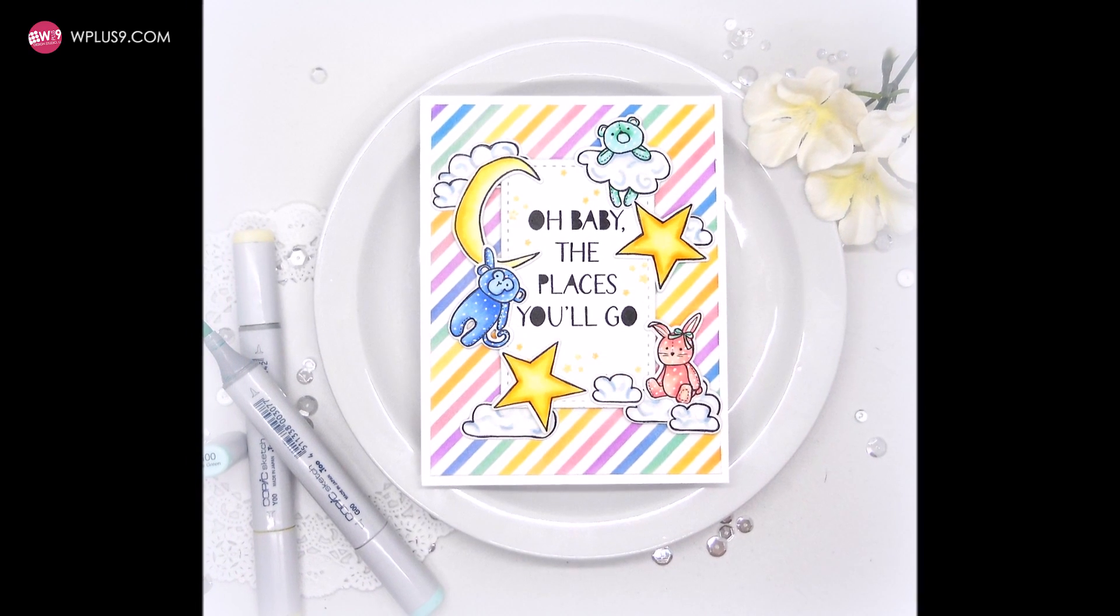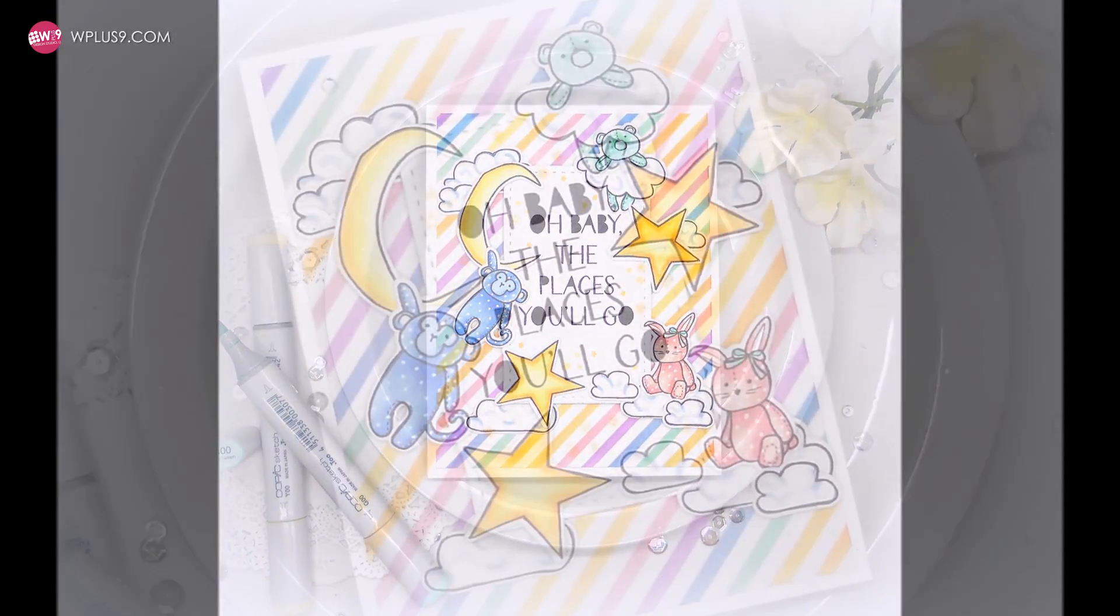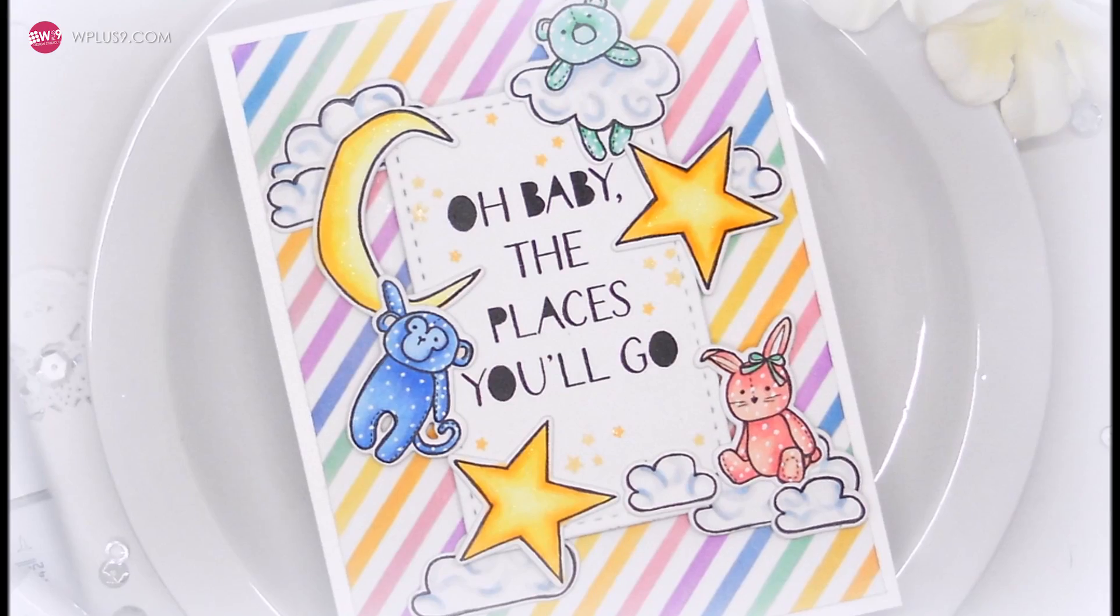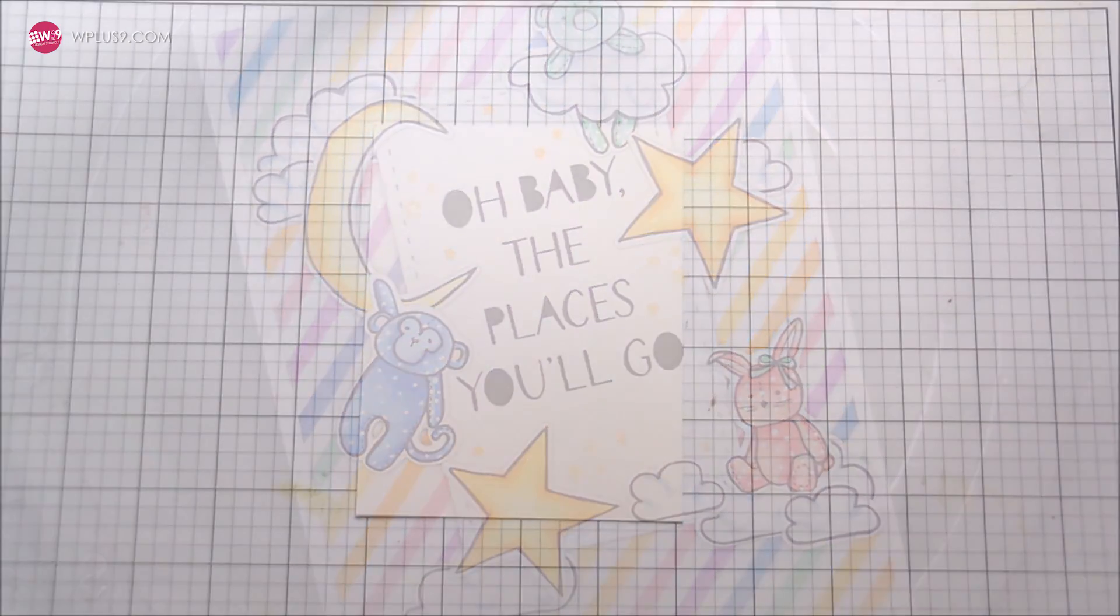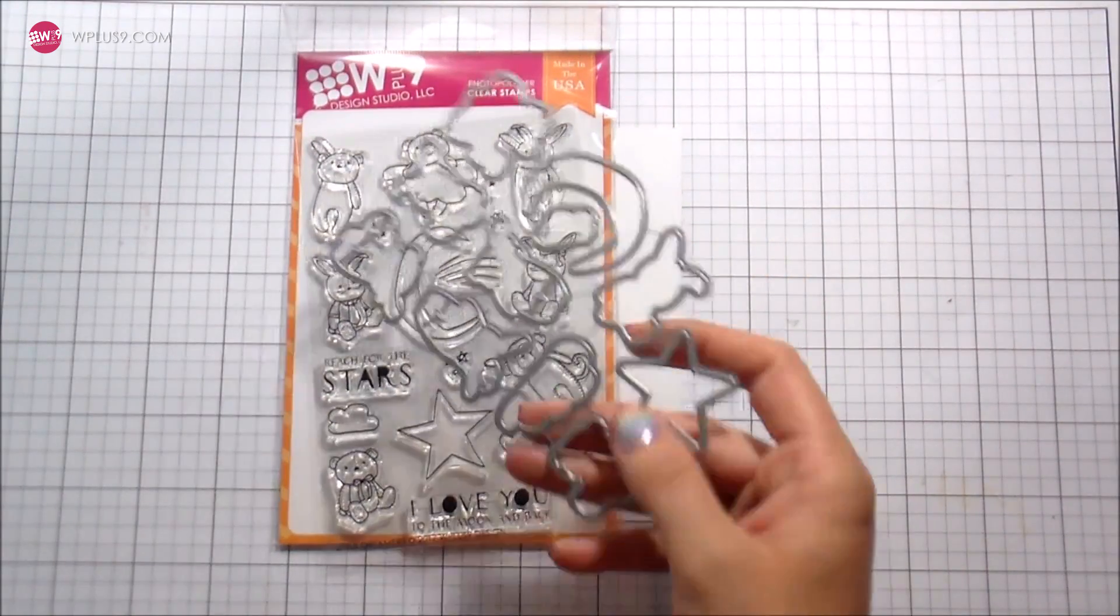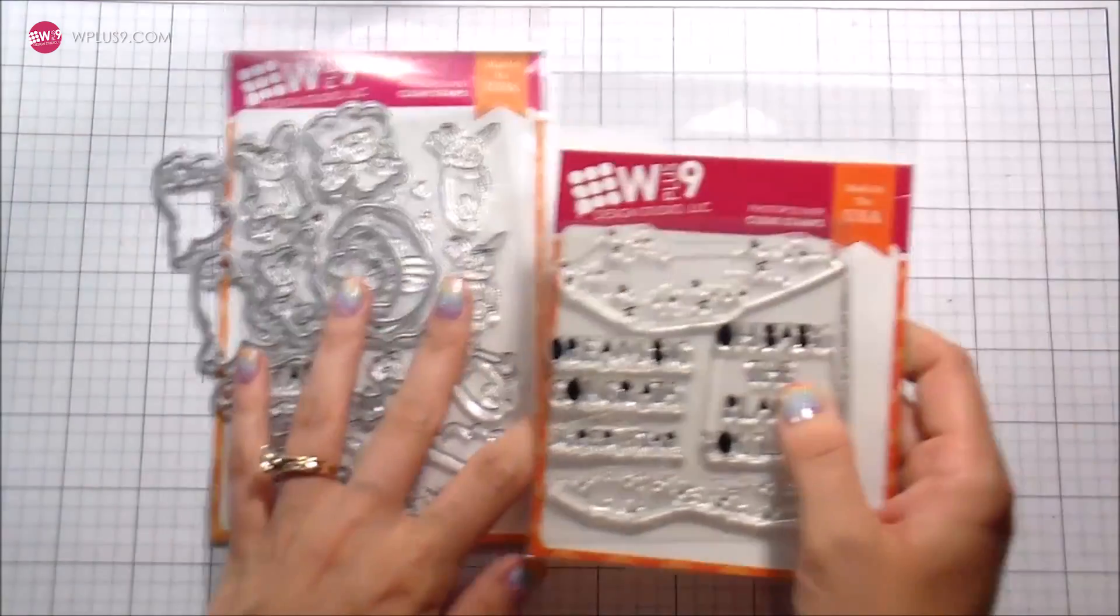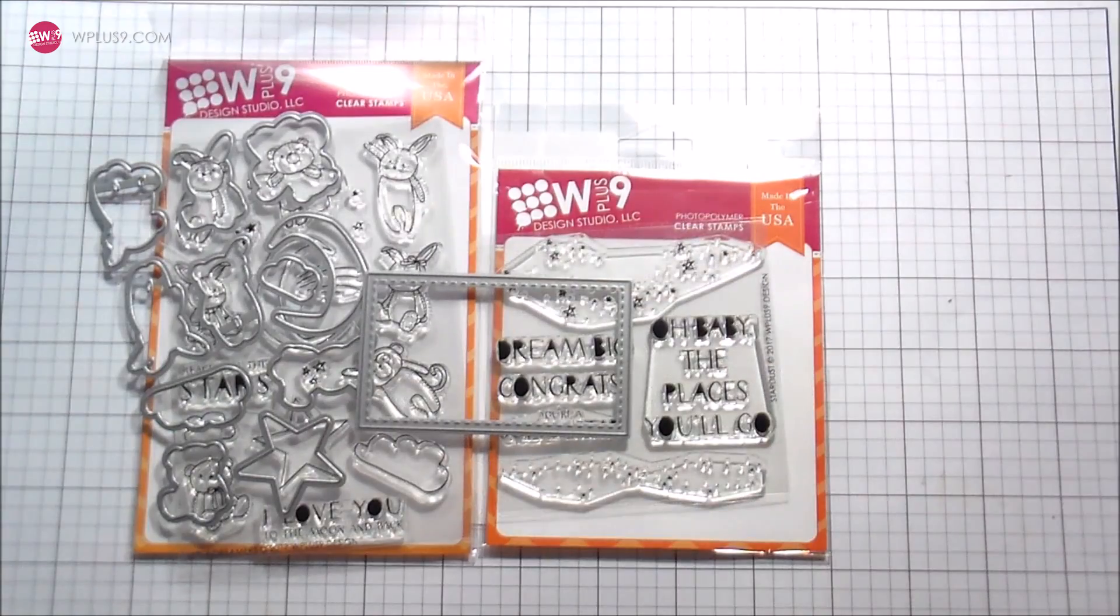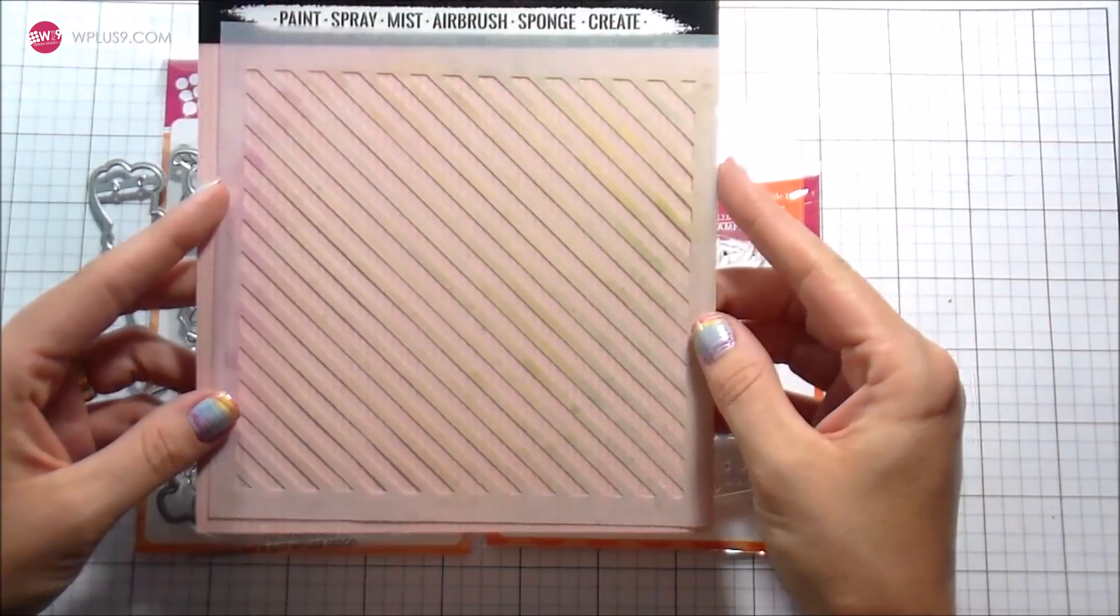Hi guys, it's Kelly from W Plus Nine and I am back with another video. Today I'm going to be using some newer stuff and some older stuff. First thing we're going to be using is this new Little Dreamers stamp set and the dies.